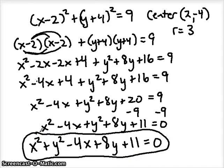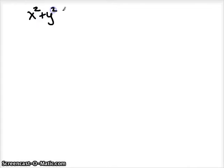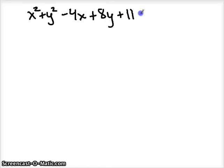General form is often not very helpful on its own, but you will see it given to you and often the question will ask you to state the center and radius, or rewrite in standard form. It's mostly an exercise in algebra. We're going to start with general form and work backwards to find the center and radius. Let's rewrite the equation: X squared plus Y squared minus 4X plus 8Y plus 11 equals 0.